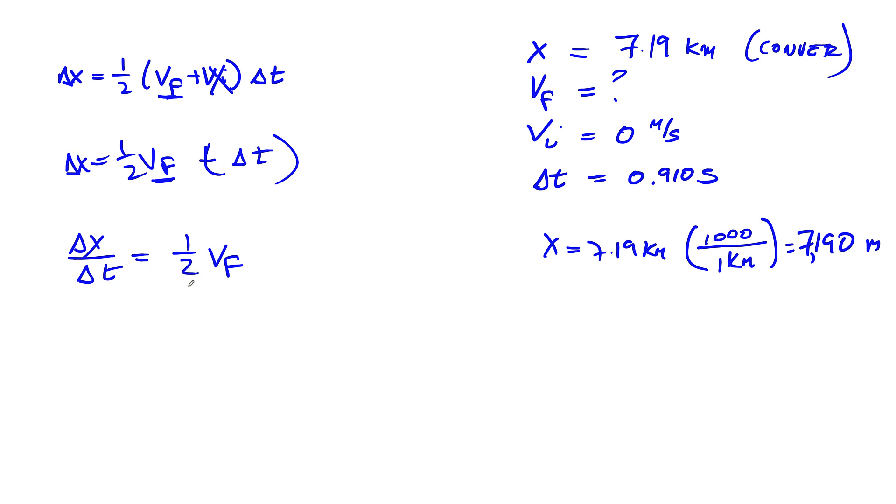Then multiply both sides by two. So two times Δx over Δt gives me the final velocity.